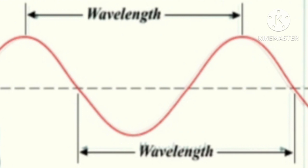Wavelength is the length of one cycle — that is, the distance between two identical points of two subsequent waves, the distance between two peaks, or the distance between two start points of compression and rarefaction.